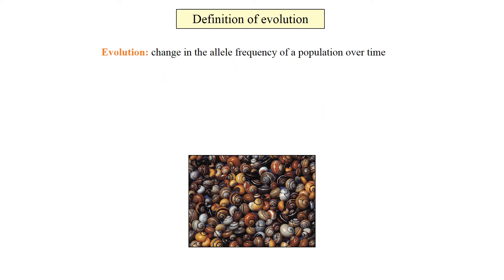How do we define evolution? We define it as change in the allele frequency of a population over time. What's an allele? A variant of a gene. We'll be visiting this again in the not too distant future.